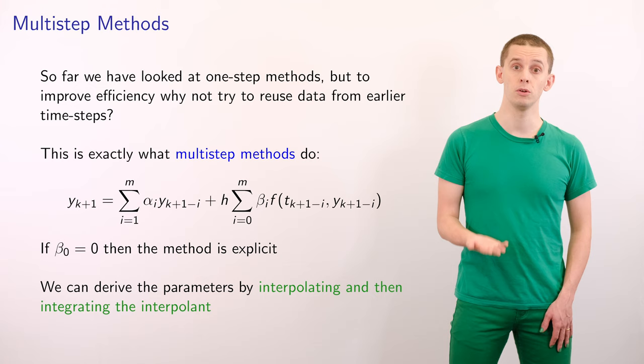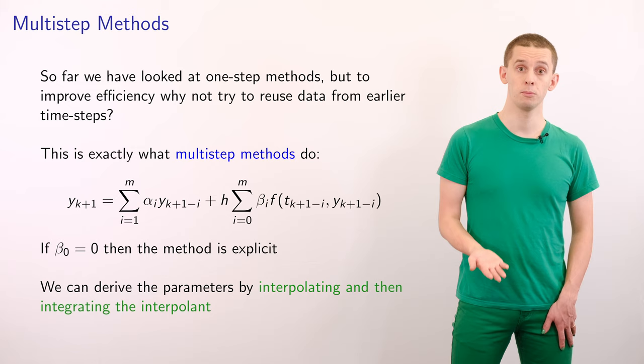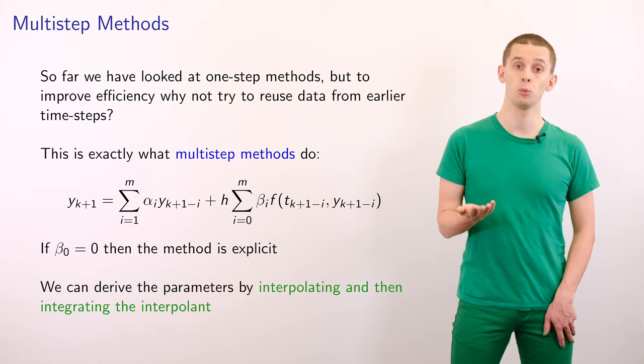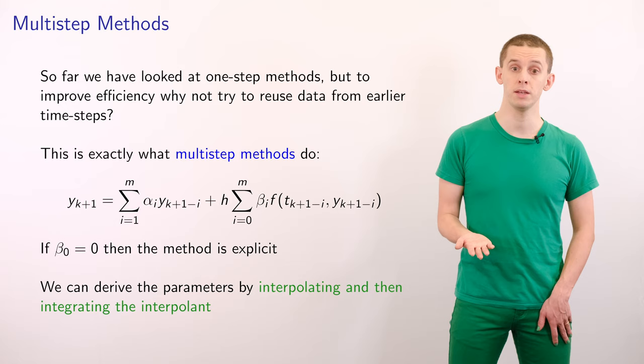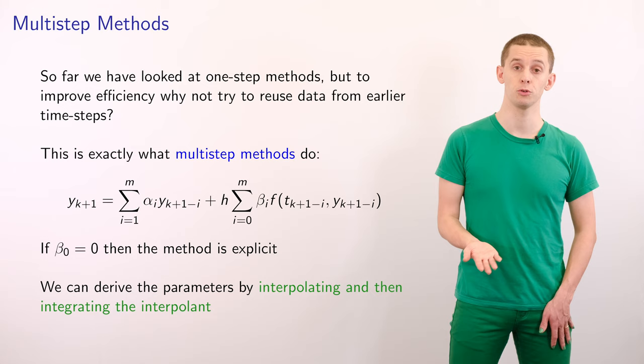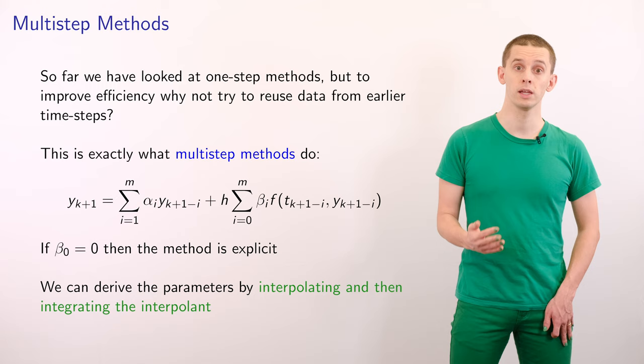We can write down a general multi-step method where y_{k+1} is equal to the sum from i equal 1 to m of alpha_i times y_{k+1-i}, plus h times the sum from i equals 0 to m of beta_i times f of t_{k+1-i} comma y_{k+1-i}. With these two sums we are looking back by m steps into the past.